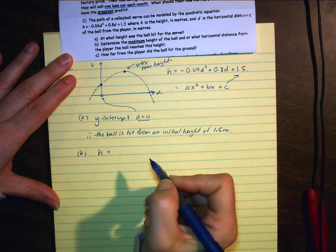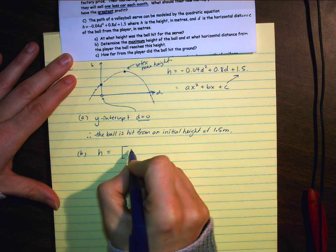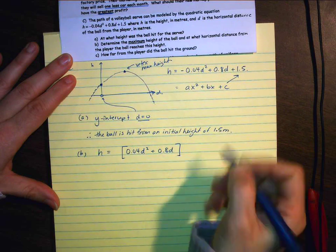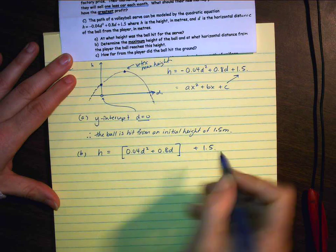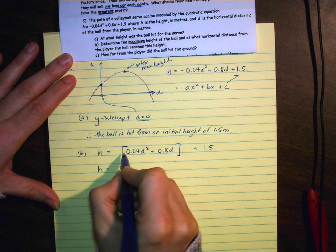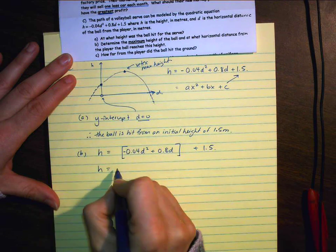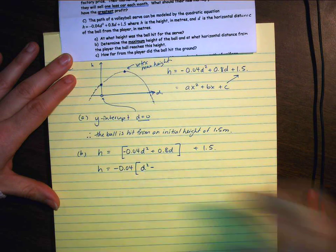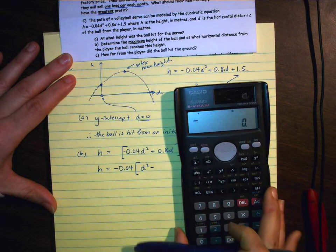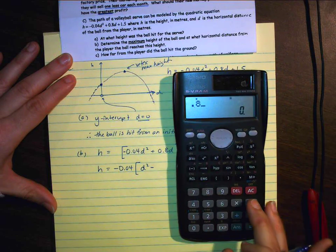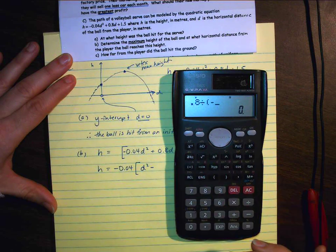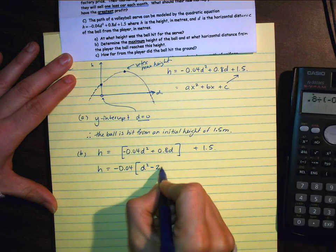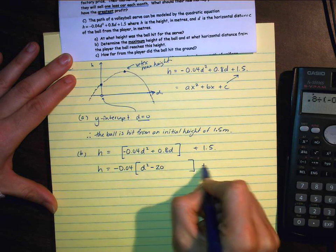So the first thing I'm going to do is, again, separate my first two terms. I'm going to factor out a 0.04 with a negative. So that's just going to become d squared. This will become negative. You can always double check that on your calculator. So I'm taking 0.8 and I'm dividing by negative 0.04. And that's going to give me a negative 20. Close the brackets. Plus 1.5.